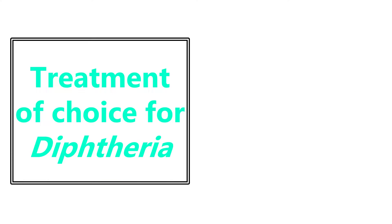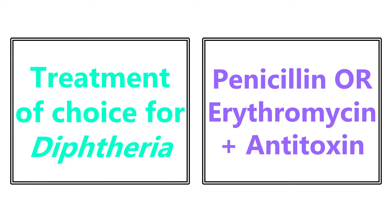Treatment of choice for diphtheria is penicillin or erythromycin plus antitoxin. We don't commonly see diphtheria nowadays because of vaccination, but if a patient is an immigrant, refugee, or unvaccinated child presenting with this, the treatment is penicillin or erythromycin plus antitoxin.